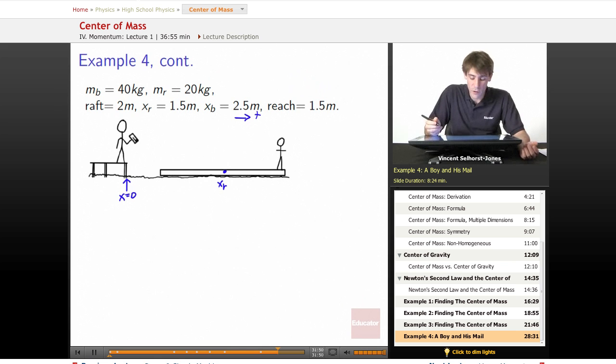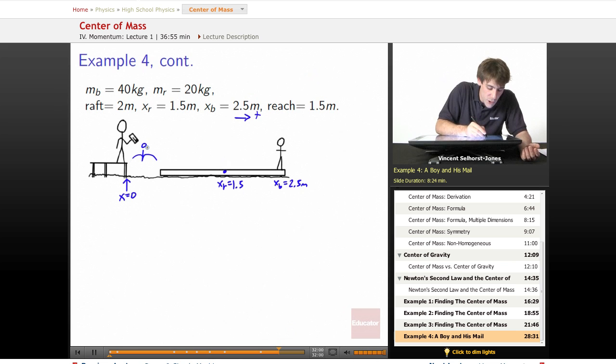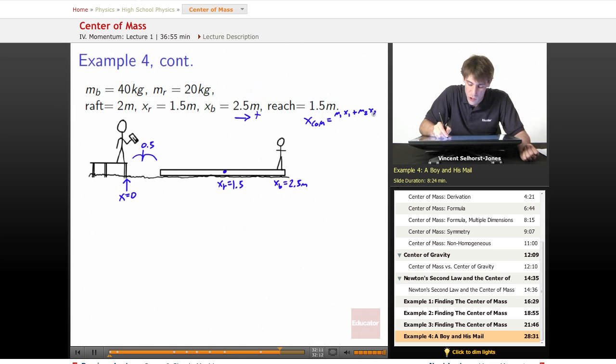All right. So at this point, we can solve for what the center of mass of the system is. So XR is equal to 1.5 meters, and XB is equal to 2.5 meters, because the edge of the boat was 0.5, and then the boat itself was 2 meters long. So what's X center of mass of the system going to be? M1, X1 plus M2, X2 all over M1 plus M2.